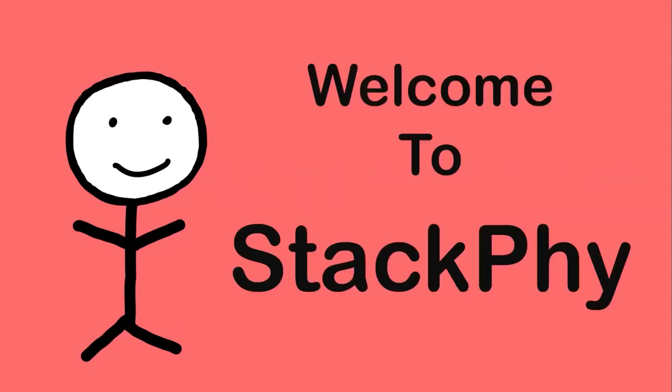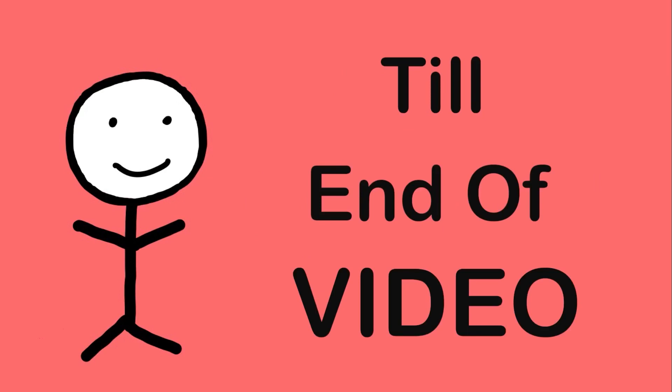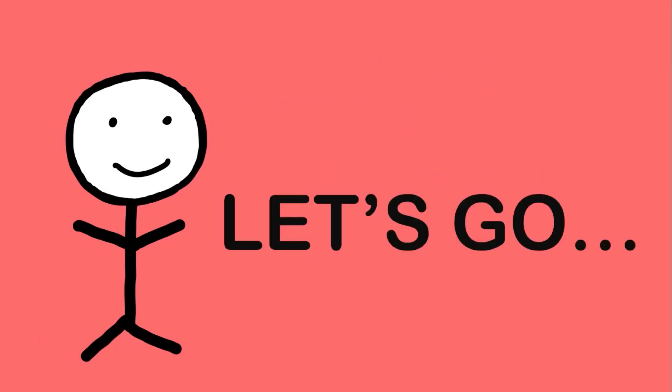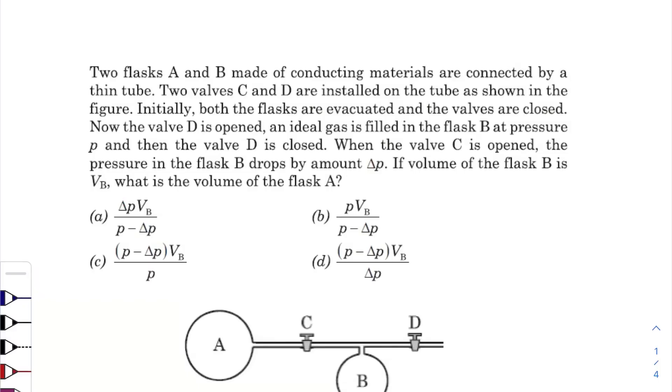Hello friend, welcome to Stack Phi. If you help me solve today's physics problem till the end of the video, then you get a cookie. So let's go! Hey, what is up everyone, I hope all of you are doing great and it's good to be back after a very long time. In today's question we have two flasks A and B made of conducting materials.